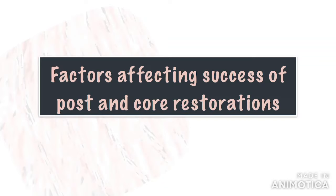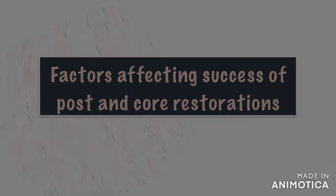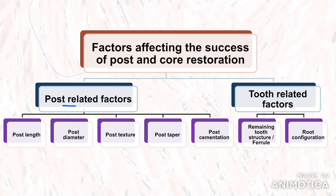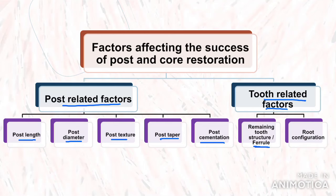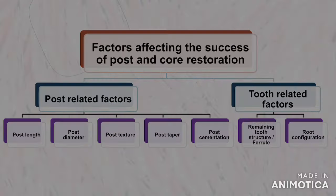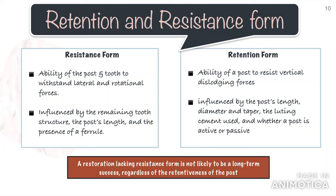Moving on, let us see some important factors affecting the success of post and core procedure. These factors can be classified into two parts: post-related factors and tooth-related factors. Post-related factors include post length, post diameter, post surface, post taper, and the type of luting agent used for cementation of the post. Tooth-related factors include the remaining tooth structure or the ferrule and the root configuration. All these factors are involved in enhancing the retention and the resistance form of the post. Resistance form is defined as the ability of the post and the tooth to withstand lateral and rotational forces.